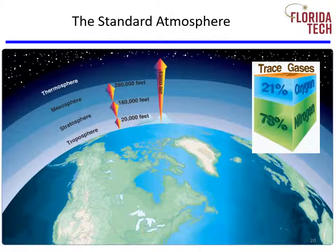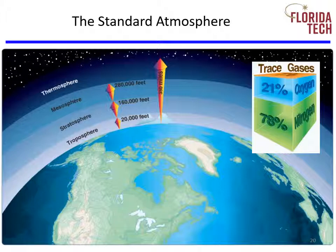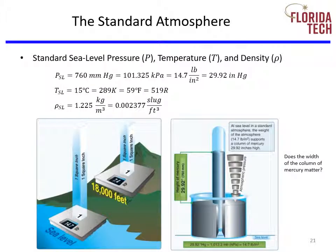The Earth's atmosphere is made up of 21% oxygen, 78% nitrogen, and 1% trace gases. All aircraft spend some time in the troposphere. Generally, aviation aircraft like the Piper Cherokee 6 spend all their time in the troposphere. Other aircraft transition to the stratosphere. Getting higher than the stratosphere requires a non-air-breathing propulsion system.